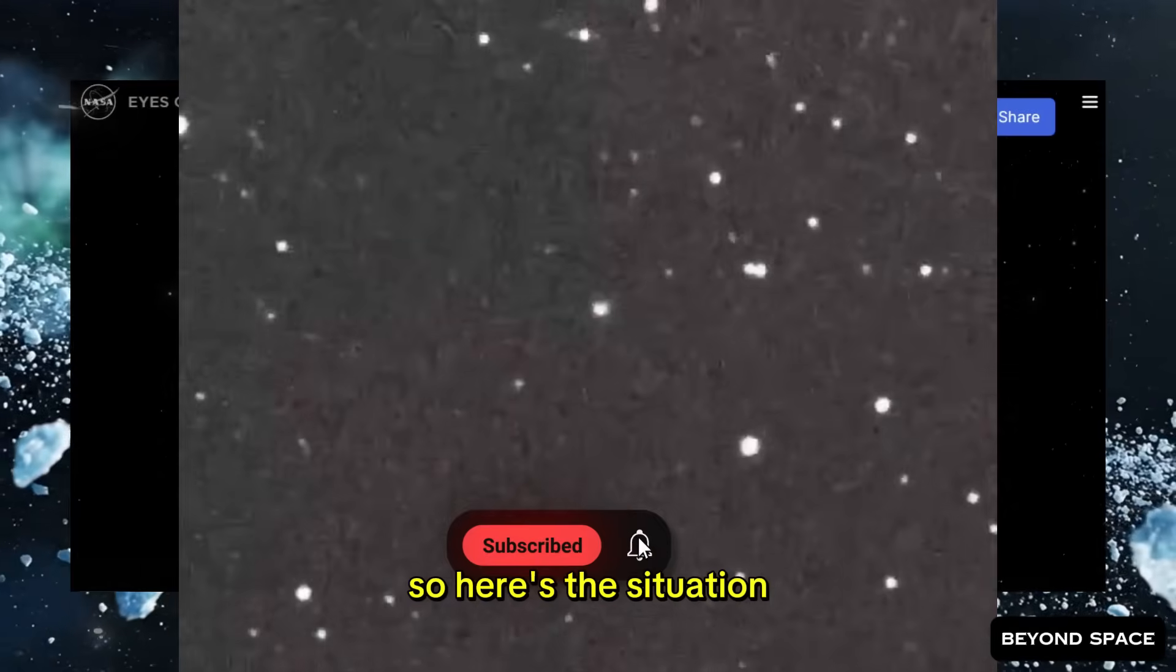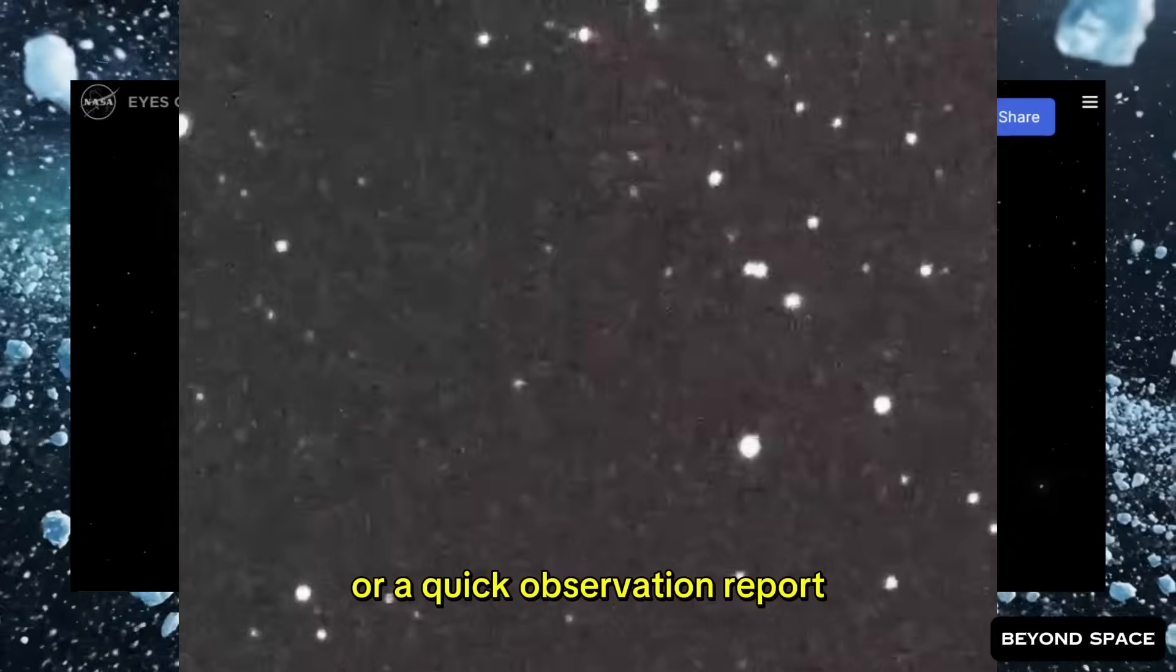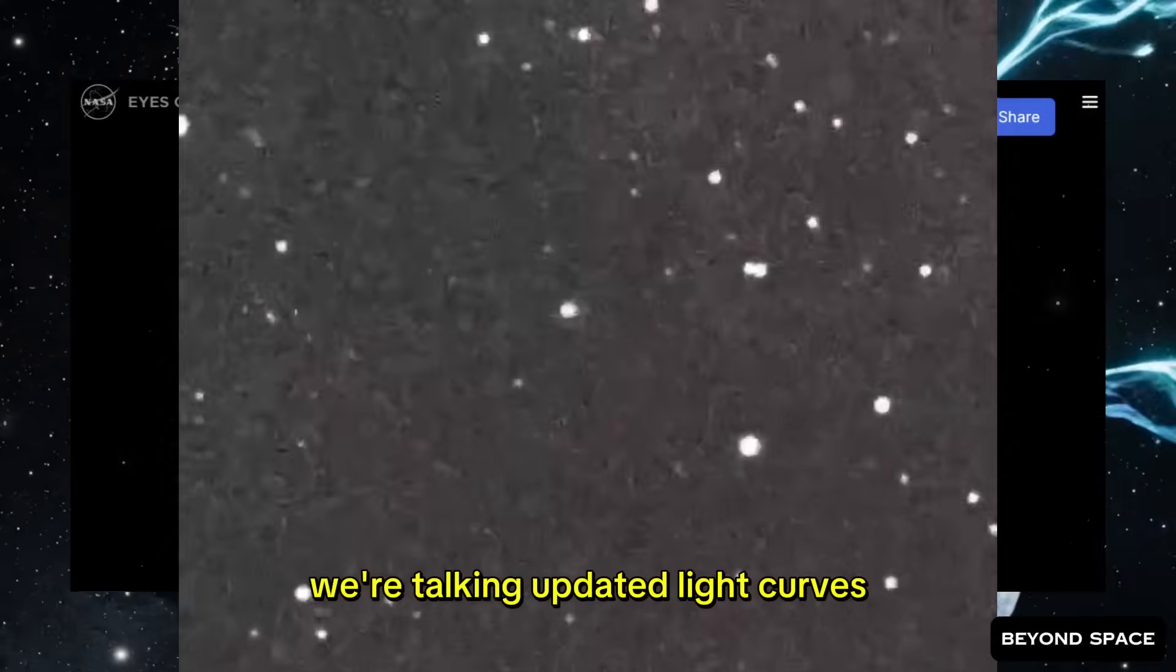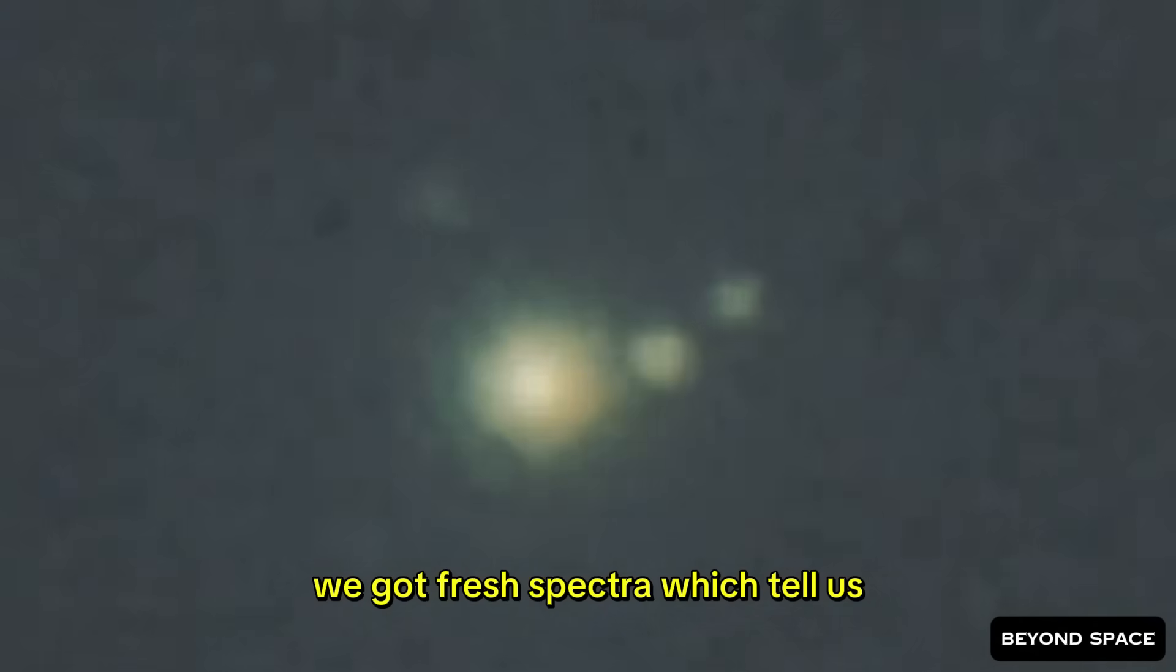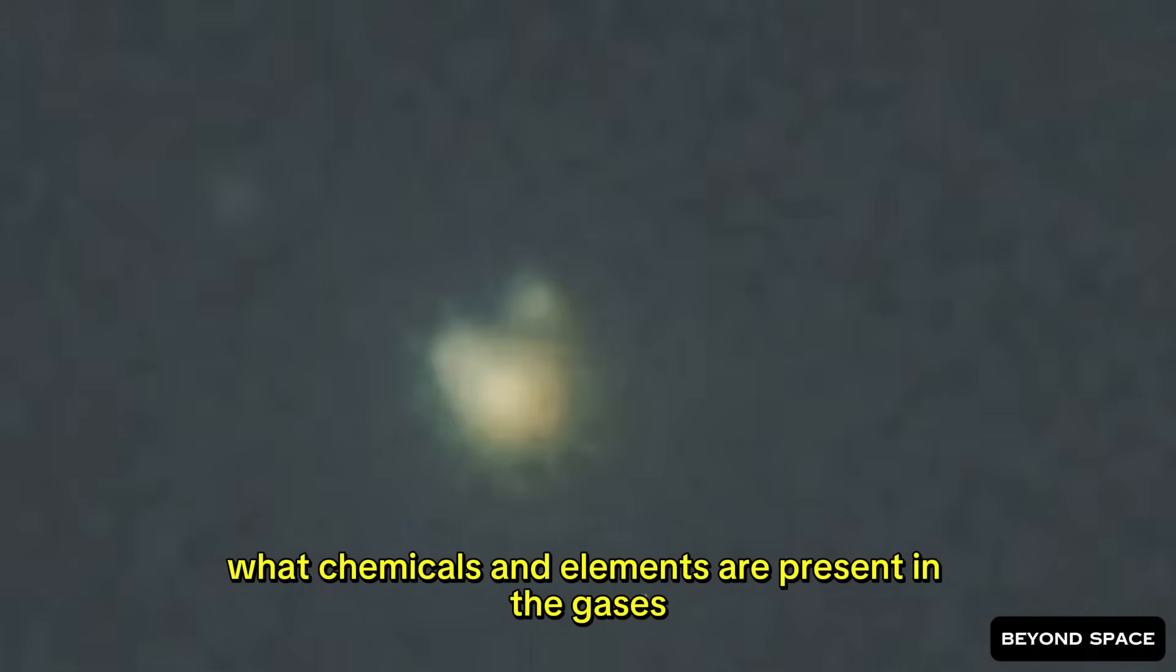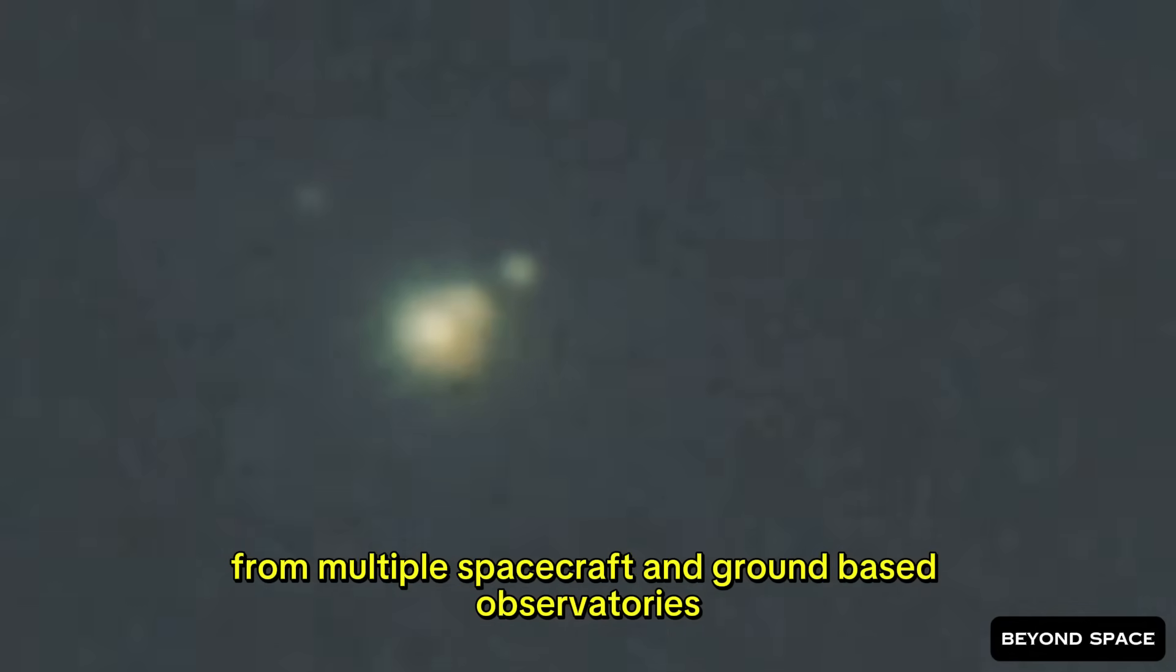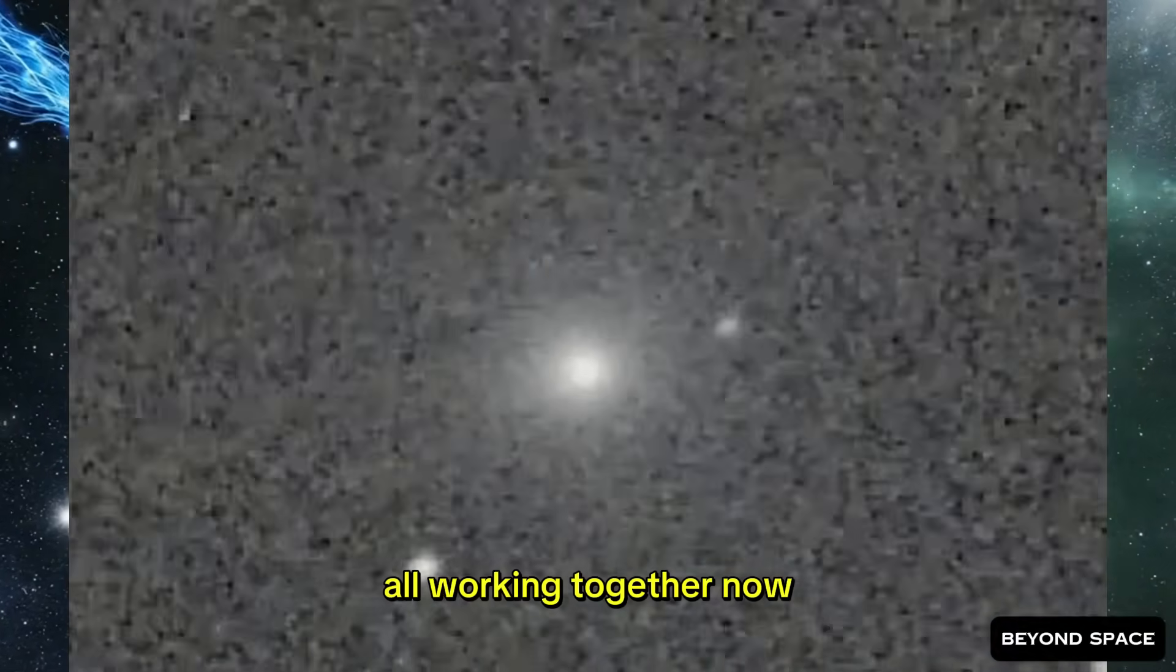Today's data release wasn't just a single image or a quick observation report. This was the full package. We're talking updated light curves, which basically track how bright the comet is over time. We got fresh spectra, which tell us what chemicals and elements are present in the gases coming off this thing. And we got these high-resolution image stacks from multiple spacecraft and ground-based observatories, all working together.